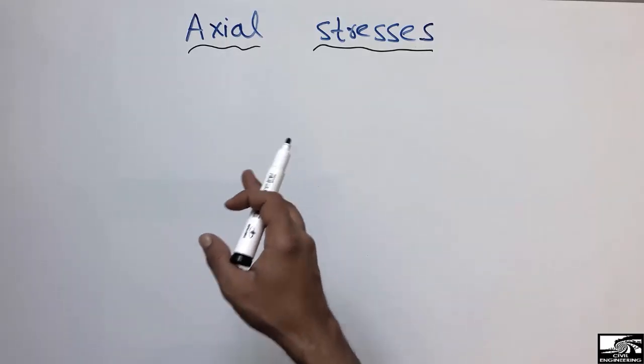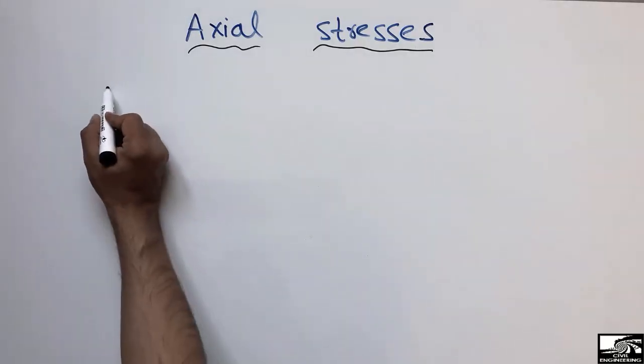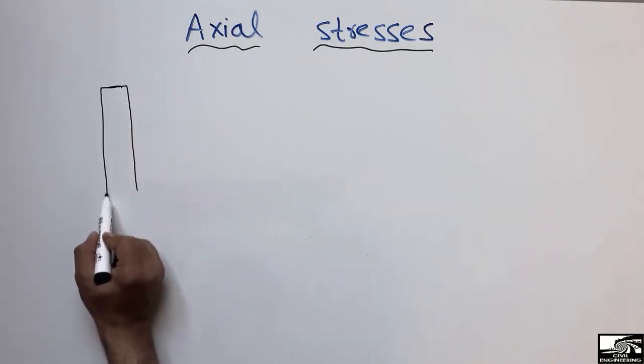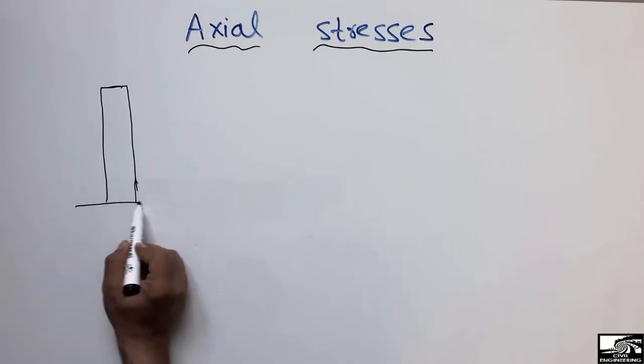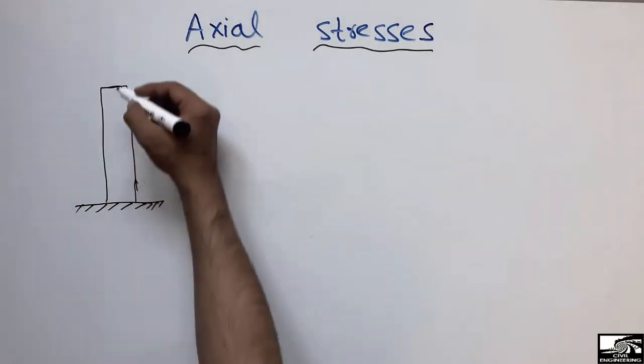the load acts along the axis of the member. For example, if I consider a column, let's suppose this is the column and this is the fixed support at the bottom. So when